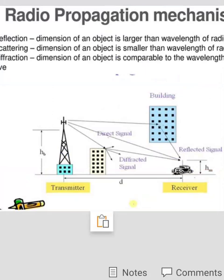In such a way, our radio wave propagates from transmitter to receiver. They are called as the radio propagation mechanism. That is reflection, scattering and diffraction.